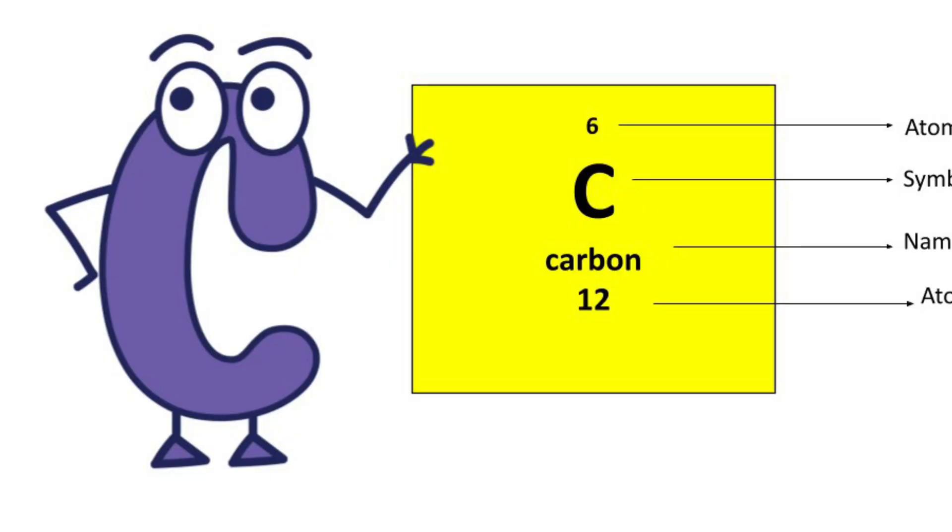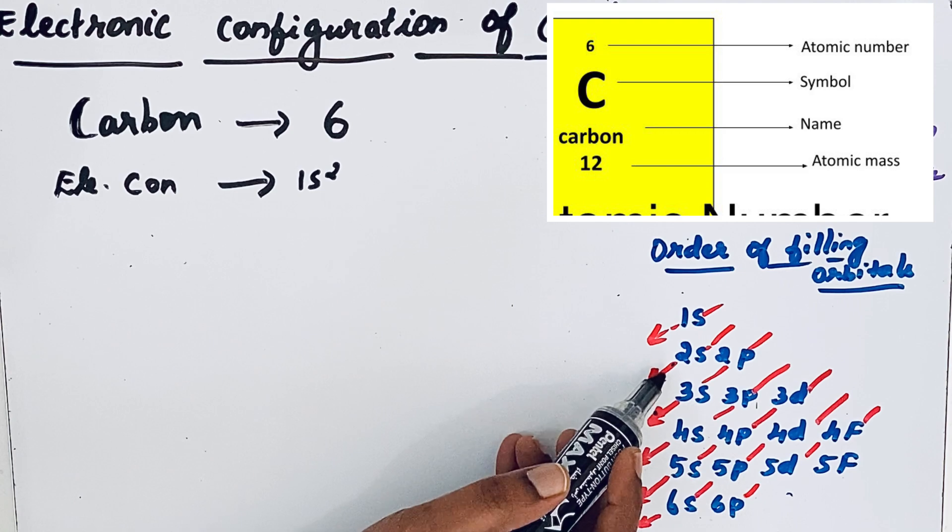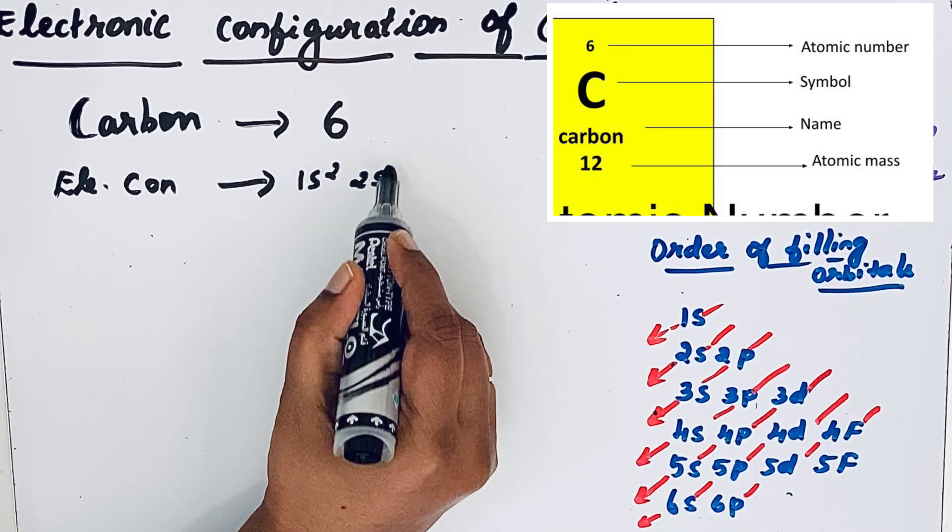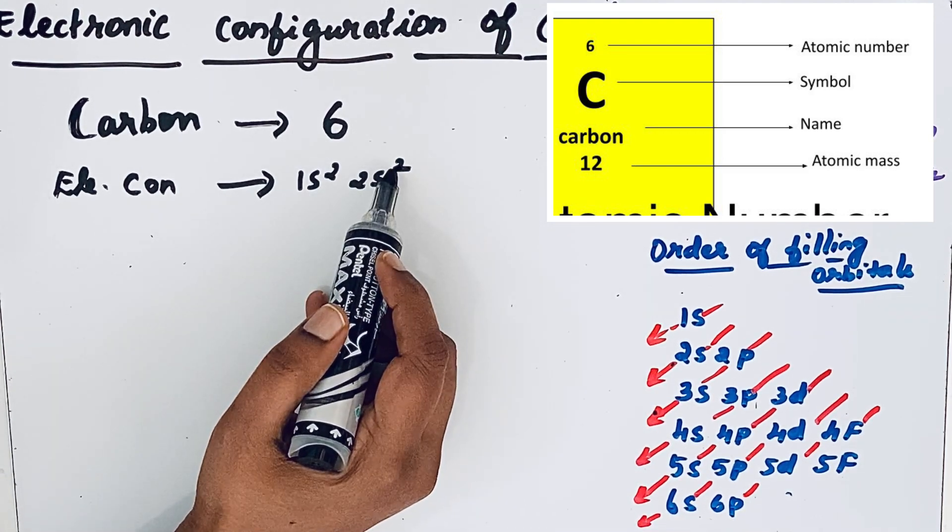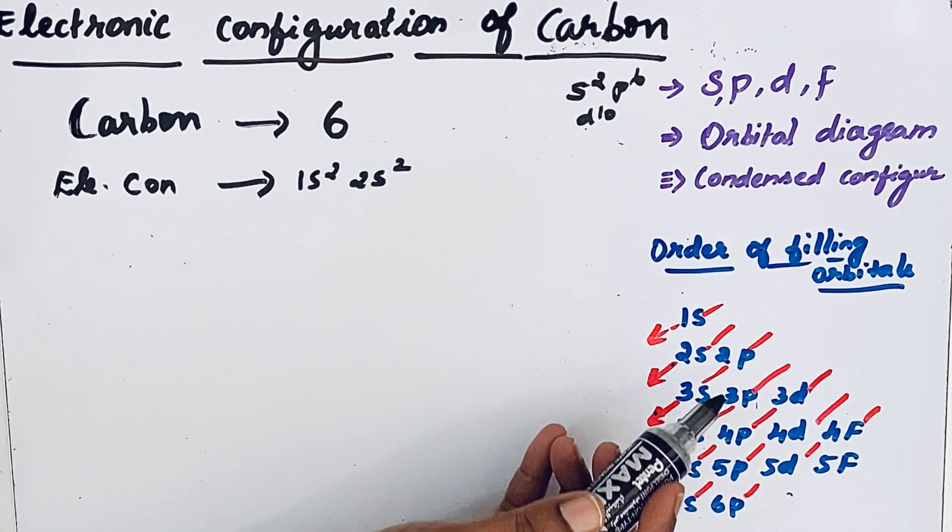For carbon, number of electrons 6. So 1s2, then after that 2s2. Plus 2 is 4 electrons over, total number of electrons 6. So remaining 2 electrons are left.